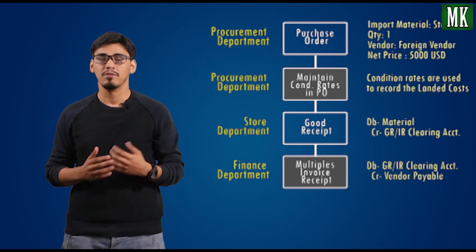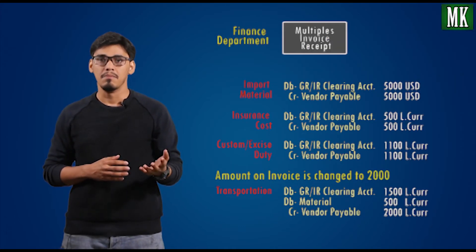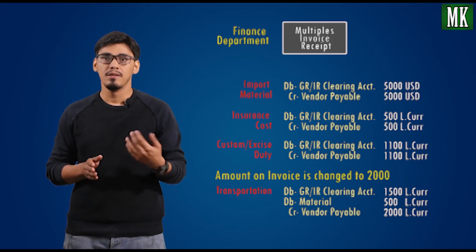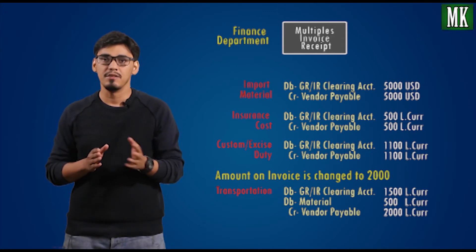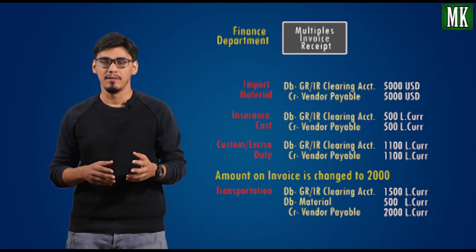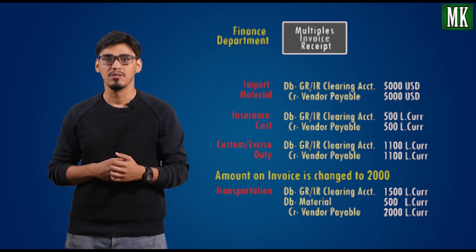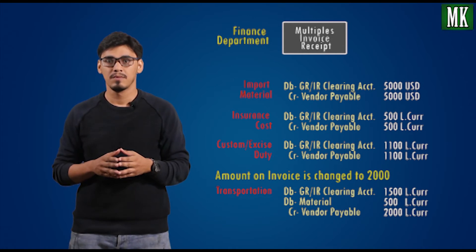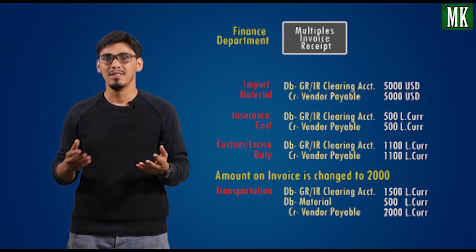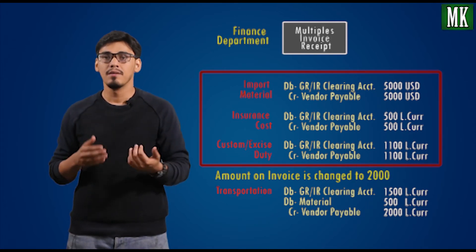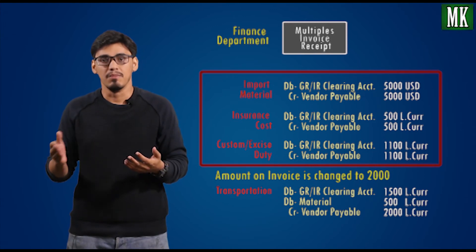The next step is to record the multiple invoices from the import vendors. These include: material cost, which is booked against the foreign vendor; insurance cost, which is booked against the insurance vendor; custom duty paid for the material, which is booked against the custom vendor; and transportation cost, whose invoice amount is changed to 2000. The accounting entries generated for all these invoices are: debit GRIR clearing account, credit vendor payable account.